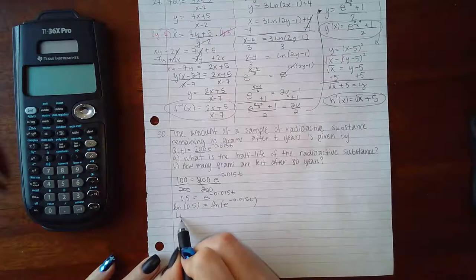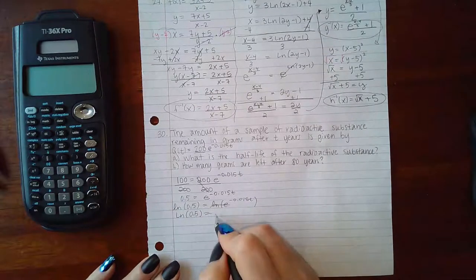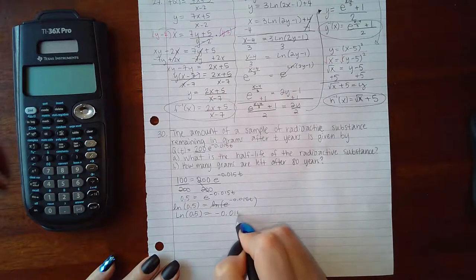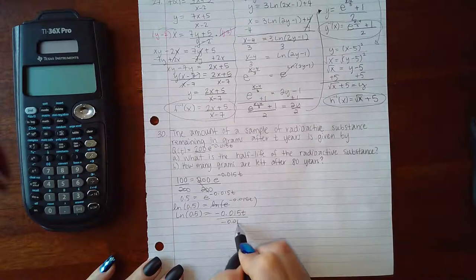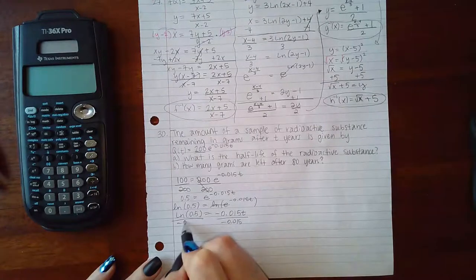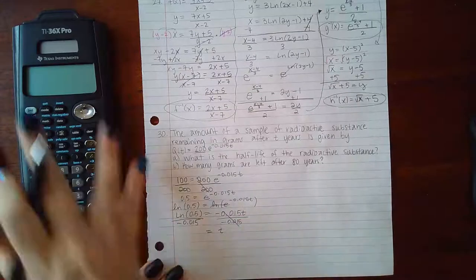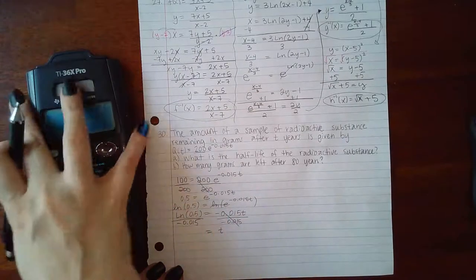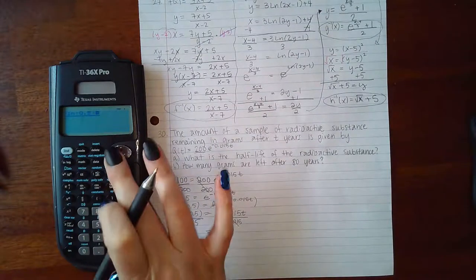And then on this side it's going to stay ln of 0.5. On this side these are going to cancel and I'm going to have negative 0.015t. And so to solve for t, I need to divide by that coefficient on both sides, and so I get t equals ln of 0.5 over negative 0.015.